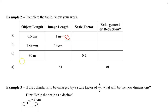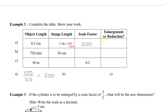Now that we've done that, we're going to take our image length of 100 and divide that by 0.5. Remember that dividing by 0.5 is the same thing as dividing by half, which is actually multiplying by 2. So 100 divided by 0.5 is 200. The scale factor is 200 — a number much bigger than 1 — which means the image will be 200 times the object, so we have an enlargement.